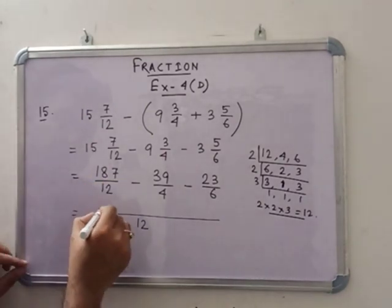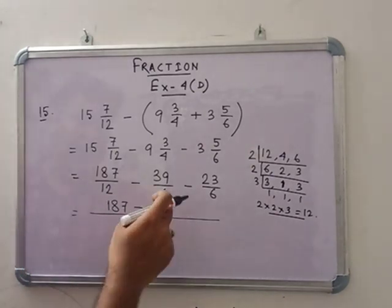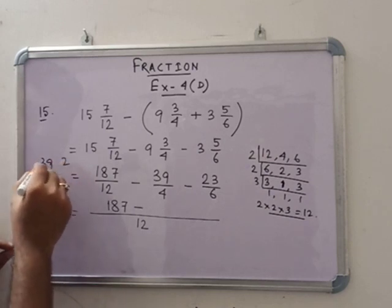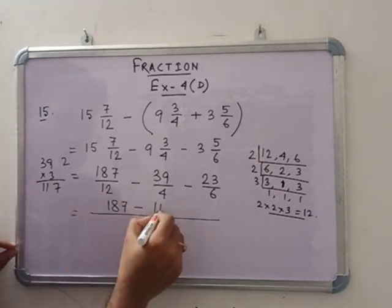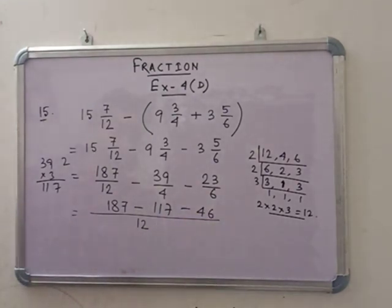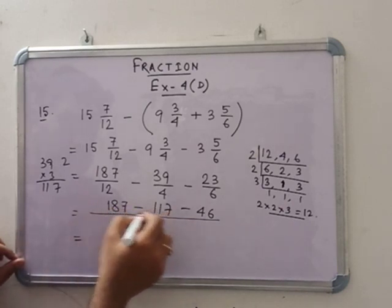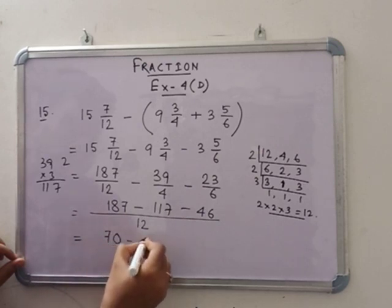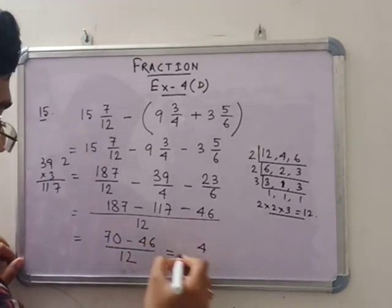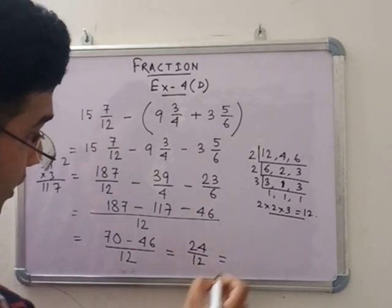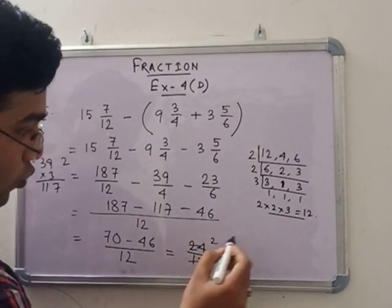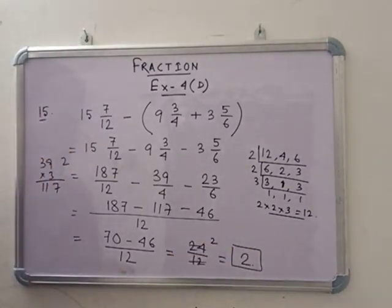That means 187 minus 39 into 3. 39 into 3 means 117. And this is 46. 23 into 2 is 46. Now this minus this is 70 minus 46 by 12. That means this is 24 by 12. So if we divide 24 and 12, then we get 2. So 2 is the answer here.